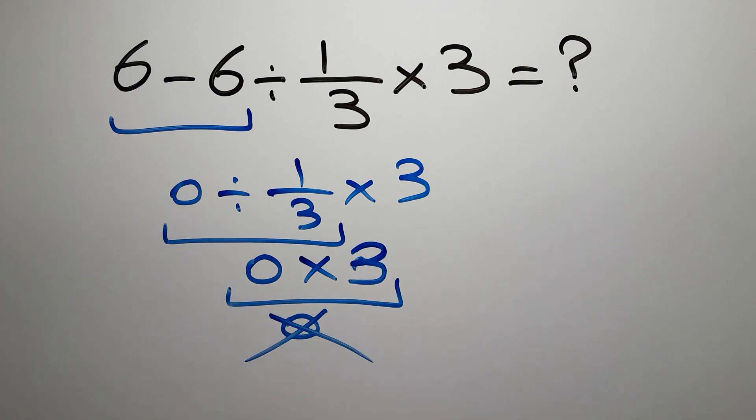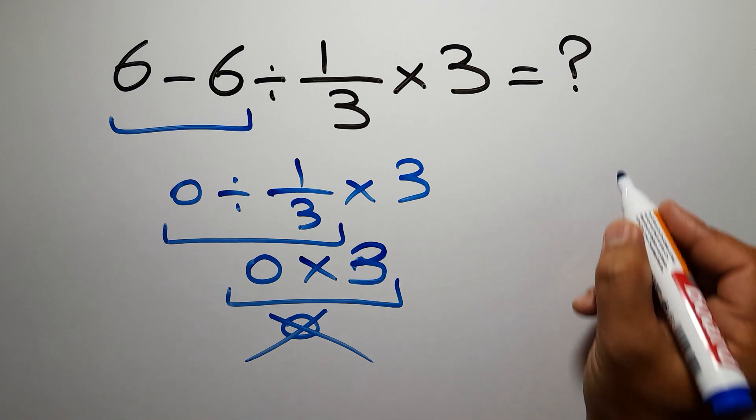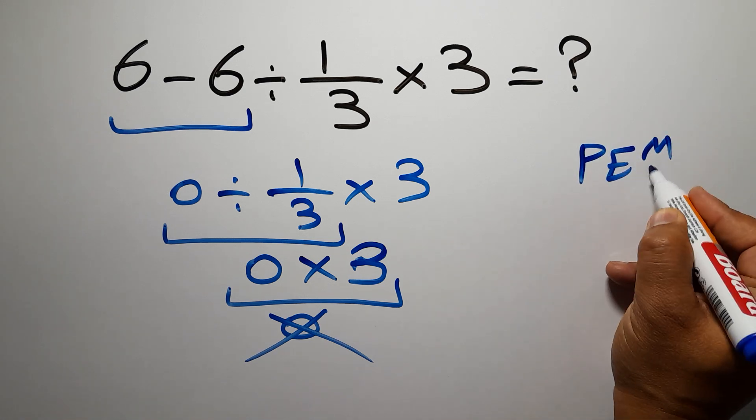But this answer is not correct, because according to the order of operations, first we have to do parentheses, then exponents, then multiplication or division,